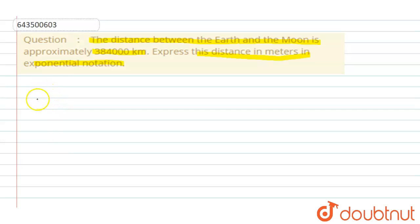So distance between Earth and Moon is 384000 kilometers. Clear. So now we know that one kilometer is equals to thousand meters.